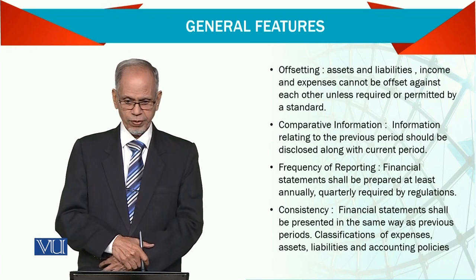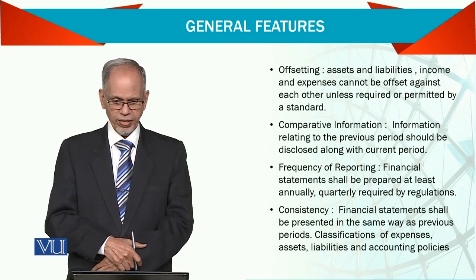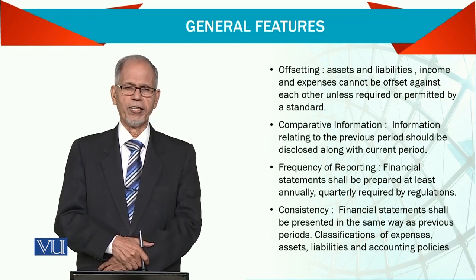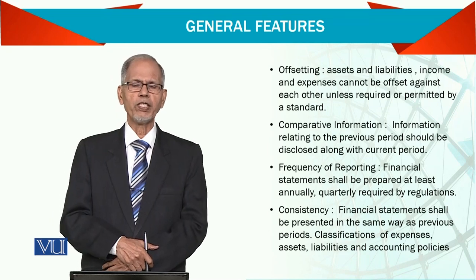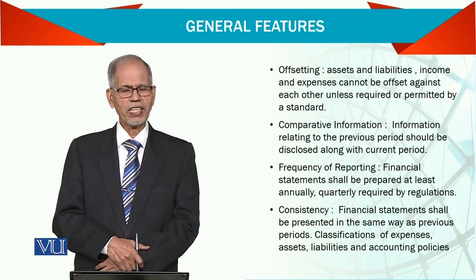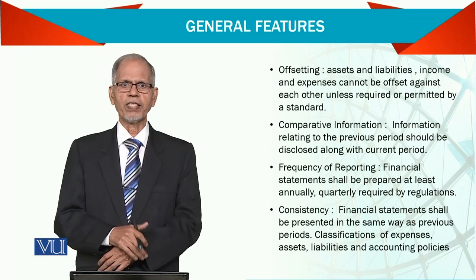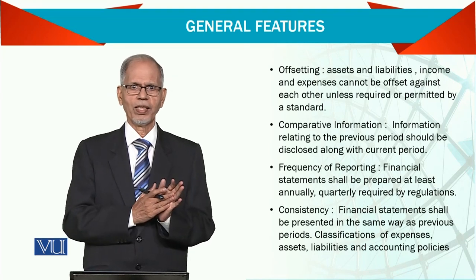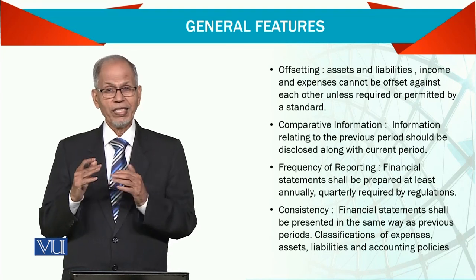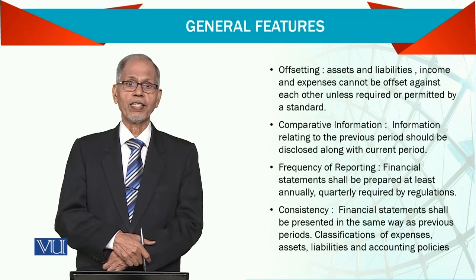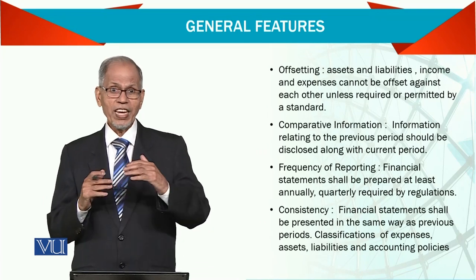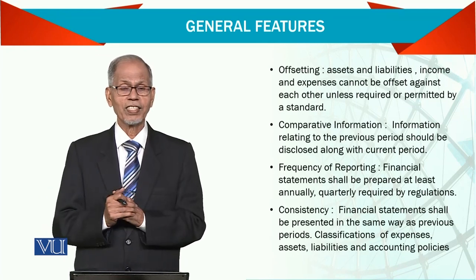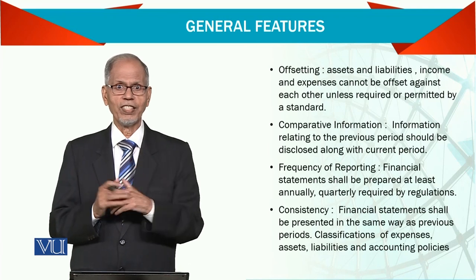Next is comparative information. Information relating to the previous period should be disclosed along with the current period. Normally we produce comparative statements so that we can match the trend and see how things are going. What we need to look at in comparative information is whether there is a major change in some items, and then the question arises how that change has occurred.